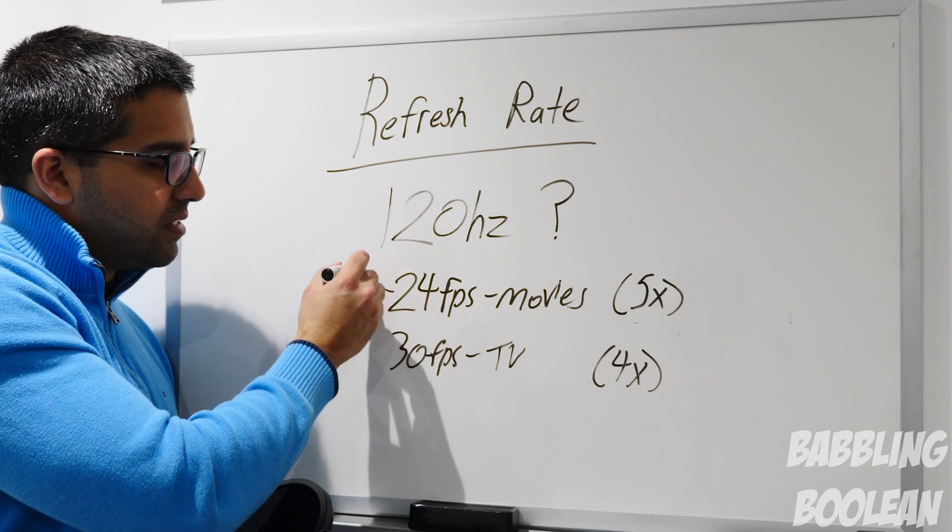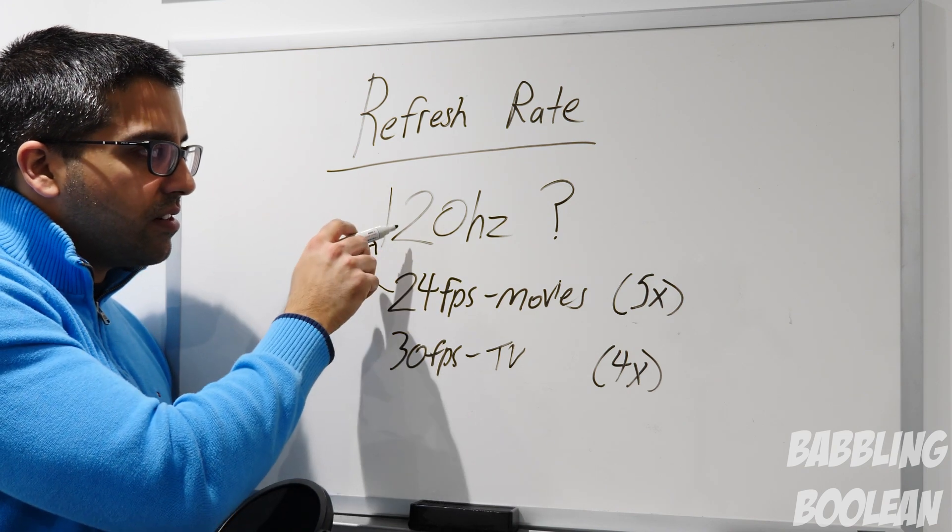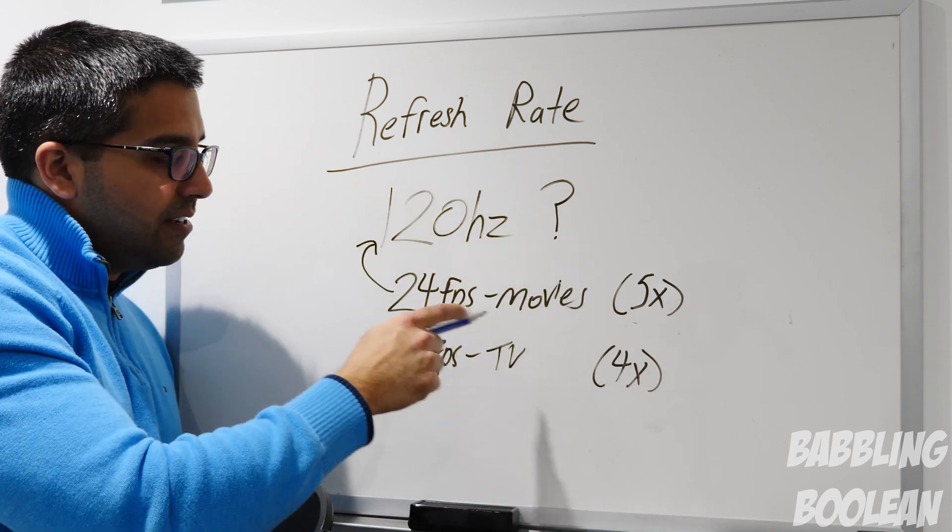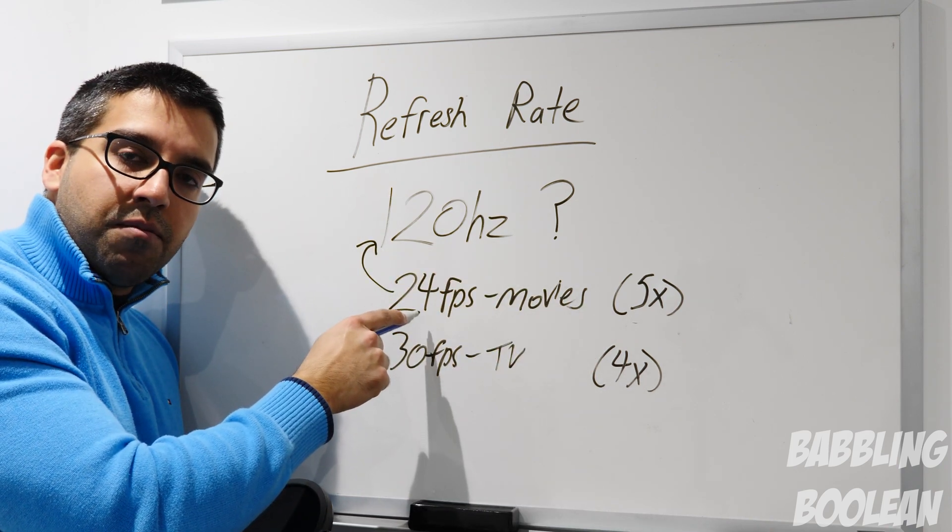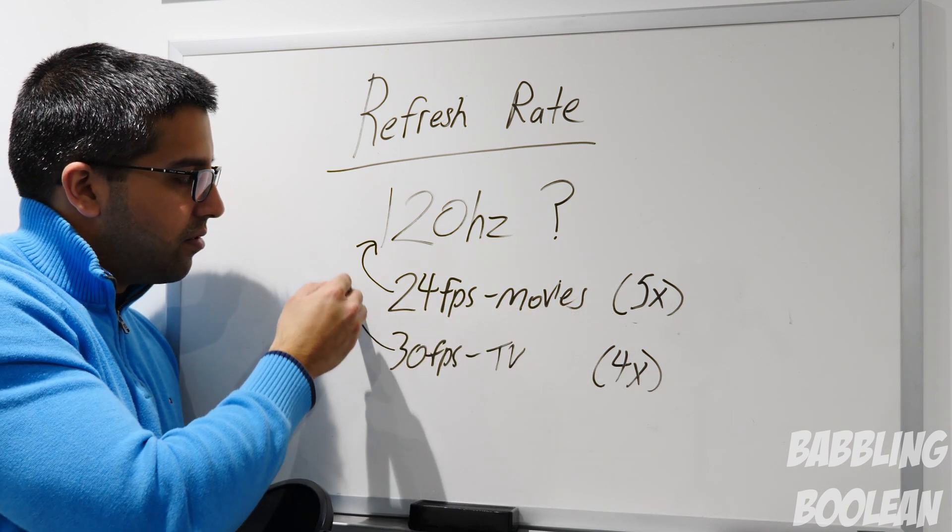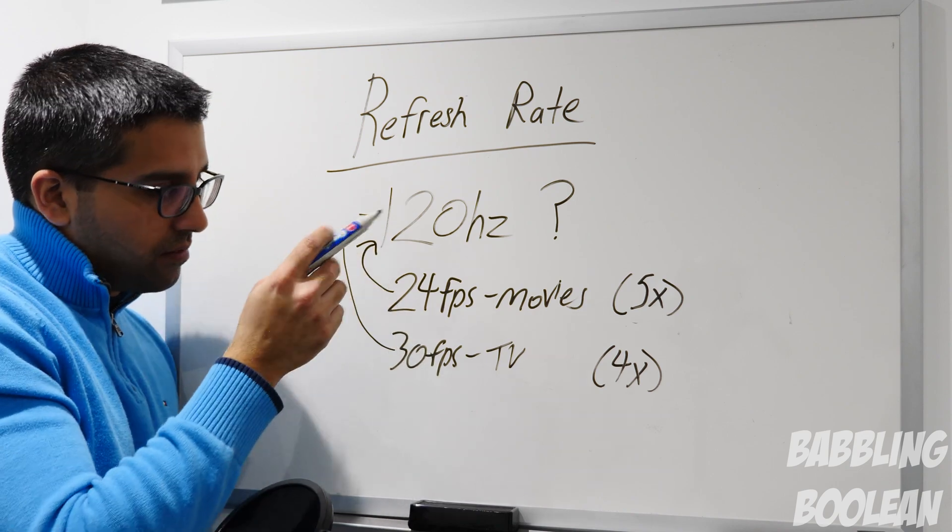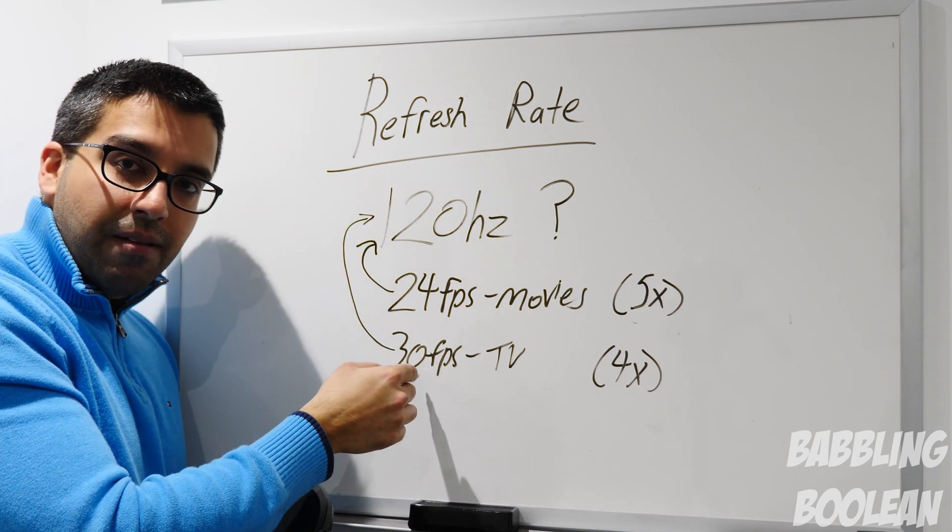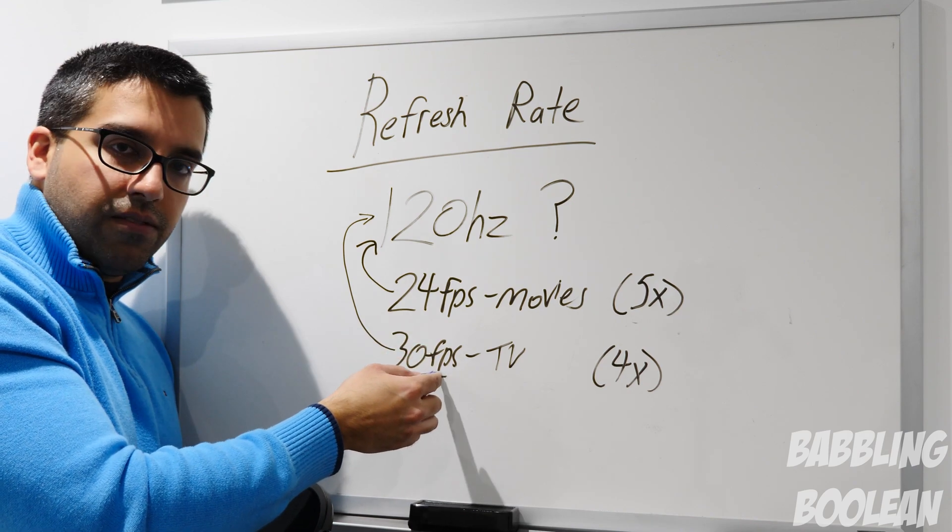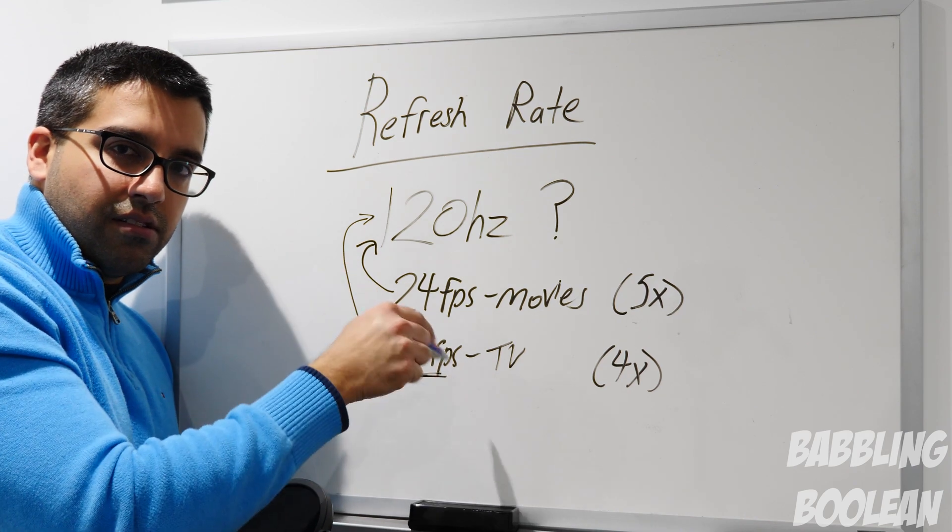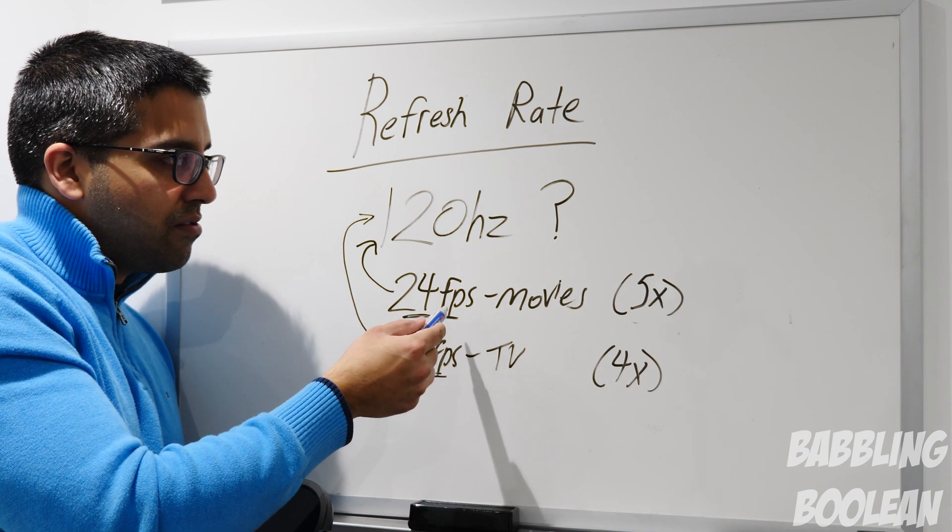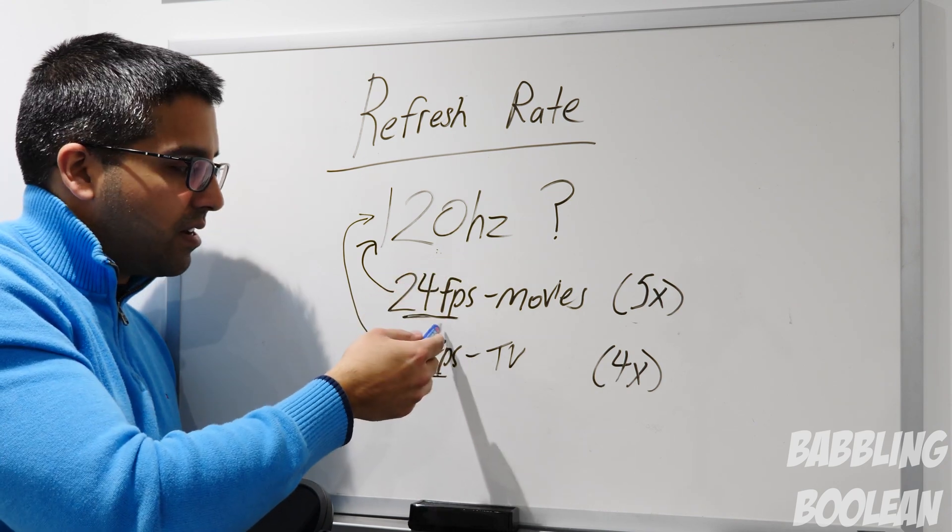So 24 frames a second movies goes into 120 five times, right? It's a good divisible here. So what happens is each frame for a movie will play five times. Same concept with 30. 30 works very well with 120. It's a good divisible, so it'll play each frame four times. So nothing really changes here for TV shows as much because it's still a good solid divisible, but movies will look slightly smoother on 120 hertz refresh rate because it's not having to flip. It's always playing each frame five times consistently.